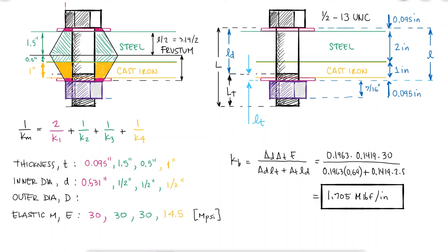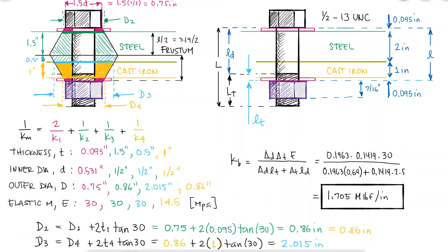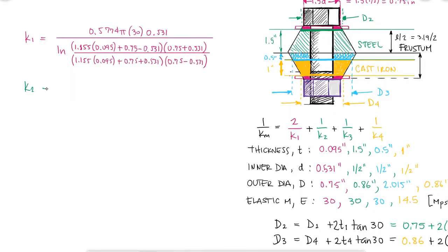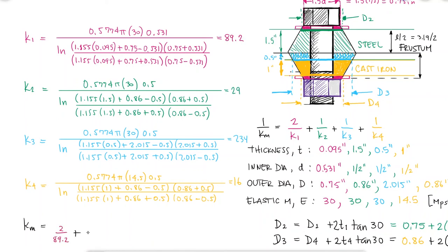Capital D will be the diameter of the nut and the head of the bolt, and we use the expression that we derived during the main video for member k2, which will be the same that for member k4, and finally for member k3. Substituting these values in the member stiffness equation that we derived, we find that the equivalent stiffness of the members is 8.08 mega pounds per inch. Thanks for watching!